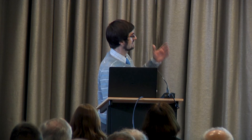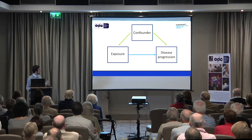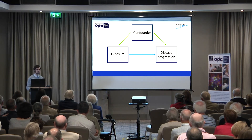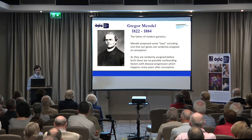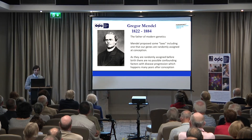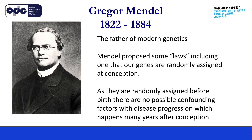This is the situation: we want to see whether an exposure predicts disease progression, but we've got this confounding issue. How can we get rid of it? It seems like the key might lie in genetics. We owe a huge debt to Gregor Mendel, whose pea plant experiments in the 1800s established many of the rules of heredity, now referred to as the laws of Mendelian inheritance. He's the father of modern genetics.